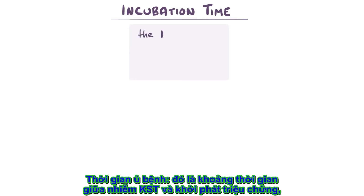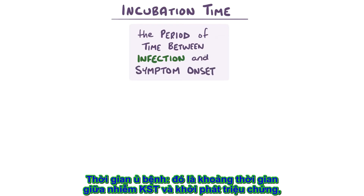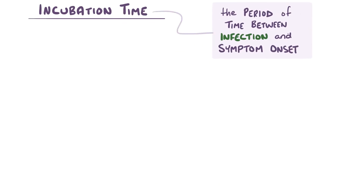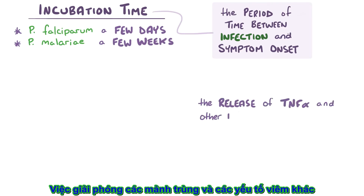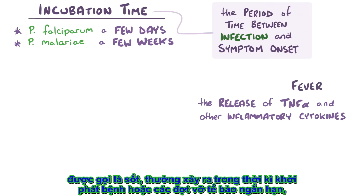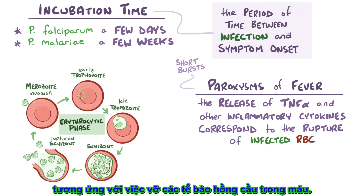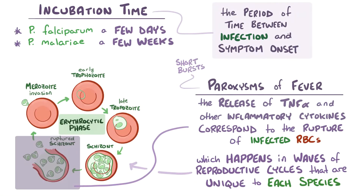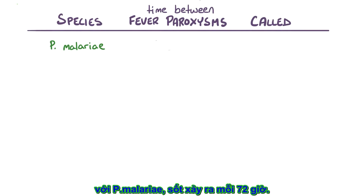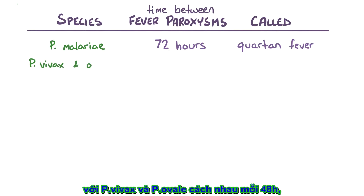The incubation time — the period between infection and symptom onset — varies depending on the plasmodium species. Plasmodium falciparum incubates for a few days, whereas Plasmodium malariae incubates for a few weeks. The release of tumor necrosis factor alpha and other inflammatory cytokines causes fevers that typically happen in paroxysms, or short bursts, and correspond to the rupture of infected red blood cells, which happens in waves unique for each plasmodium species. For Plasmodium malariae, fevers happen every 72 hours and are called quartan fever. For Plasmodium vivax and Plasmodium ovale, fevers happen every 48 hours and are called tertian fevers.